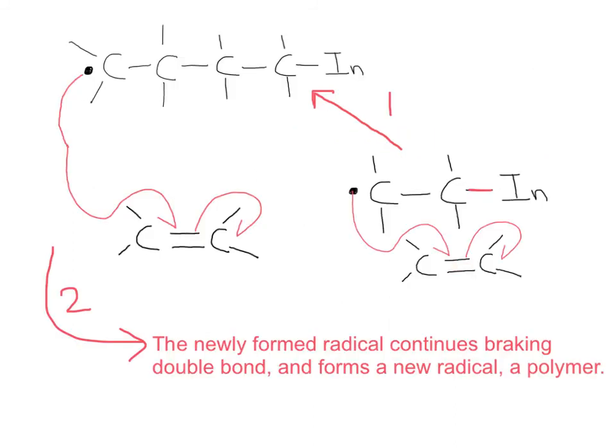The result is a continuous addition of one monomer after another to the end of the growing chain. So we started with two carbons long, we have four carbons, and we can continue adding to the double bond, forming a brand new radical.